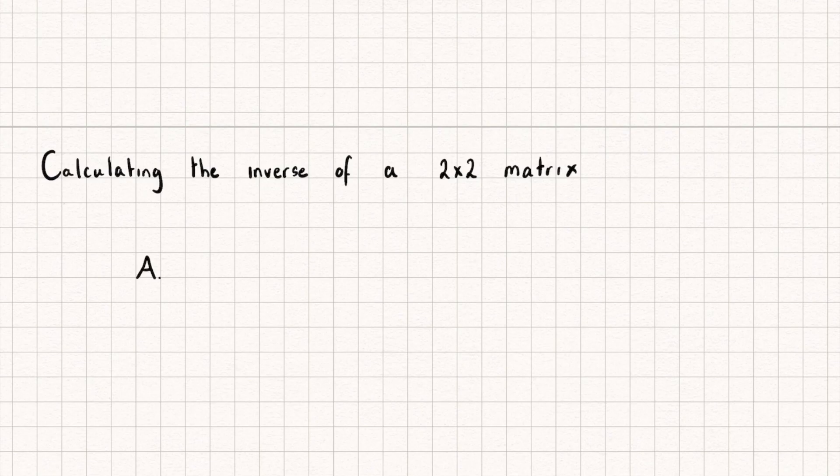We find its inverse, so A inverse, and we multiply these two matrices together. Well, the result will actually give us the identity matrix.